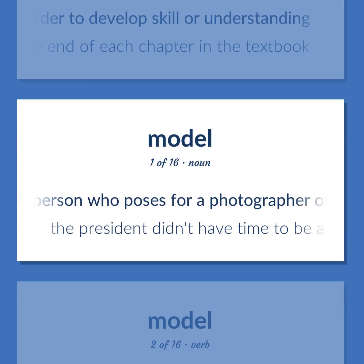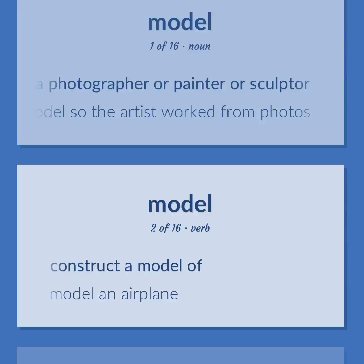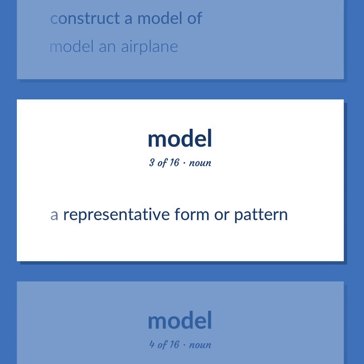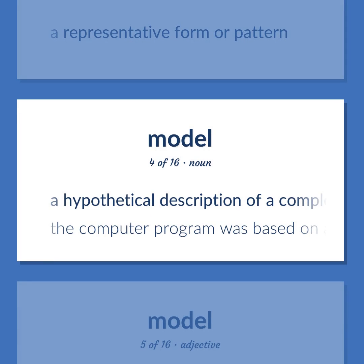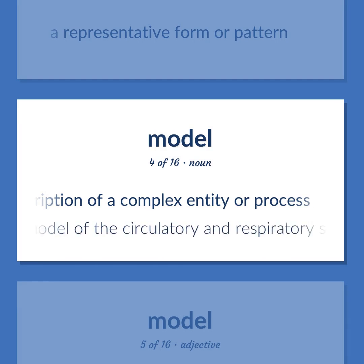Model: a person who poses for a photographer, painter, or sculptor — 'The president didn't have time to be a model, so the artist worked from photos.' Construct a model of — 'Model an airplane.' A representative form or pattern. A hypothetical description of a complex entity or process — 'The computer program was based on a model of the circulatory and respiratory systems.'